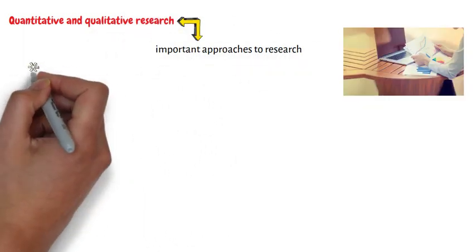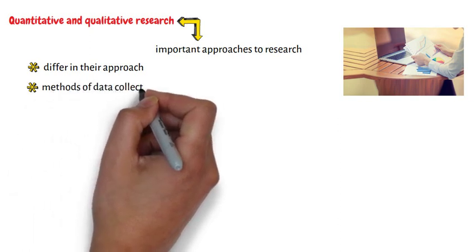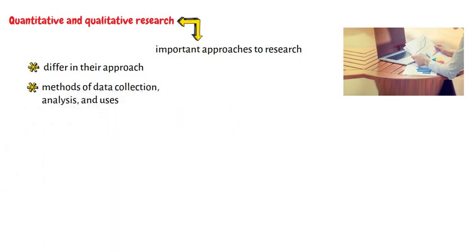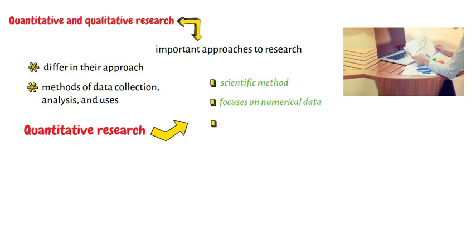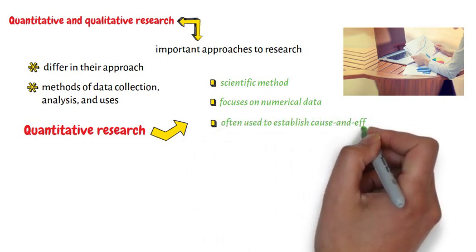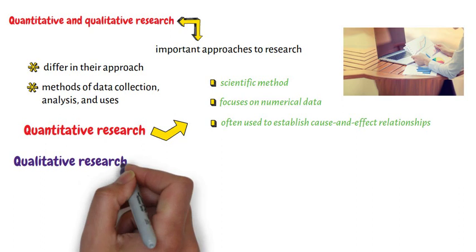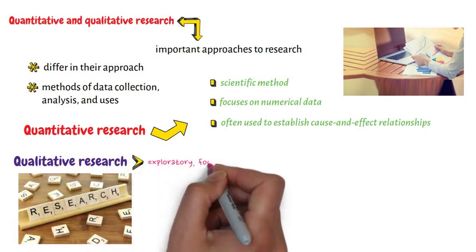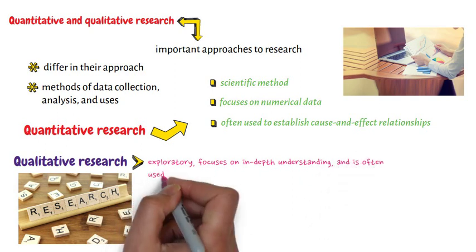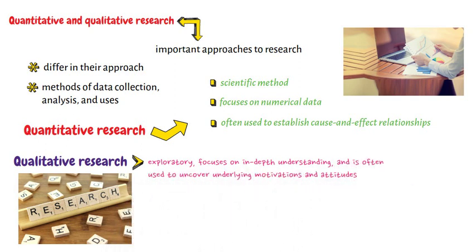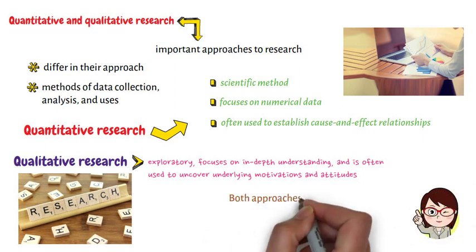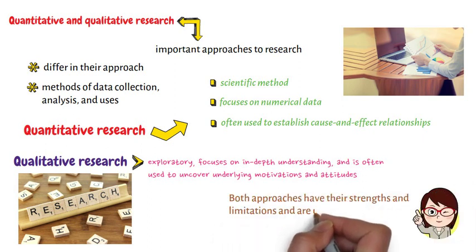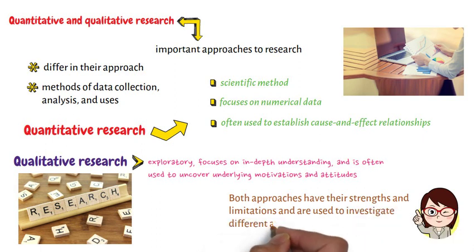In conclusion, while both quantitative and qualitative research are important approaches to research, they differ in their approach, methods of data collection, analysis, and uses. Quantitative research is based on the scientific method, focuses on numerical data, and is often used to establish cause-and-effect relationships. Qualitative research, on the other hand, is exploratory, focuses on in-depth understanding, and is often used to uncover underlying motivations and attitudes. Both approaches have their strengths and limitations, and are used to investigate different aspects of research questions.